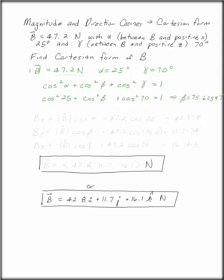Now you have your three direction cosines. To find the Cartesian coordinates, bx is the absolute value of B times cosine of alpha, by is the absolute value of B times cosine of beta, and bz is the absolute value of B times cosine of gamma.